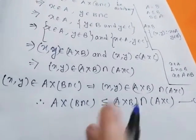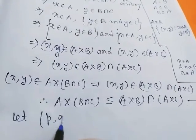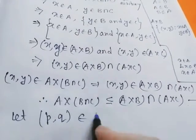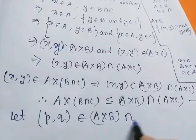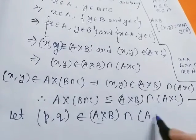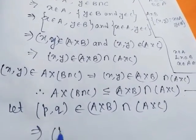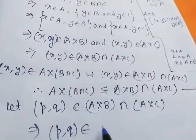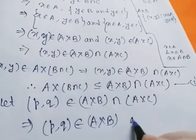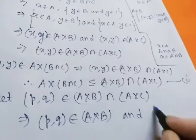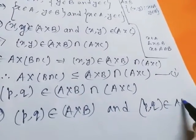Now to show (A cross B) intersection (A cross C) is a subset of A cross (B intersection C), let ordered pair (p, q) belong to (A cross B) intersection (A cross C). This implies ordered pair (p, q) belongs to A cross B and ordered pair (p, q) belongs to A cross C, by definition of intersection.